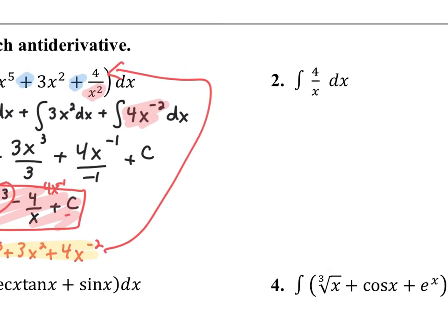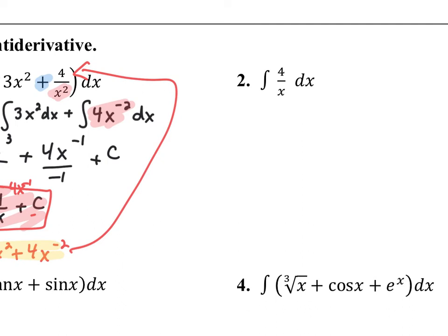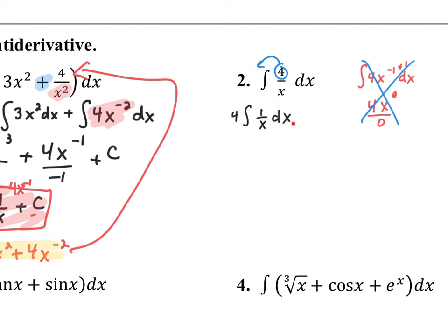In question 2, it looks like the third term from question 1. If I try to bring x to the numerator and apply the power rule — add 1 to the power, divide by the new power — this becomes x to the 0 divided by 0, which is undefined. That's not the way to go. This is where the natural log comes in. I pull the 4 to the outside, and since 1 over x is the derivative of the natural log of x, the answer is 4 times the natural log of the absolute value of x, plus c.